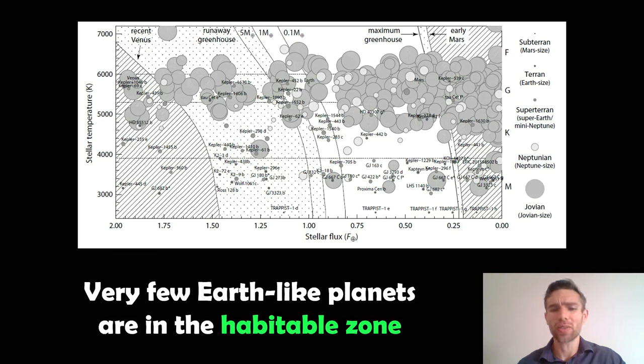And this is planets that could potentially be habitable. And if you look really carefully, there's not many Earth-like planets that are getting the same sort of stellar flux or energy to their surface as Earth does. So very rare to have Earth-like planets in the habitable zone.